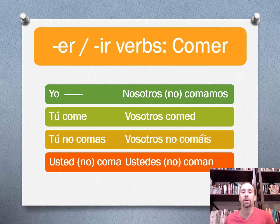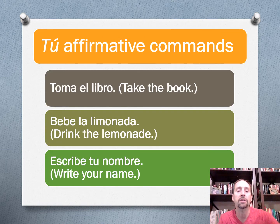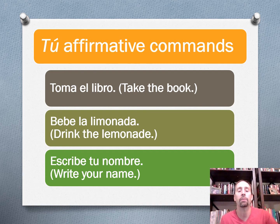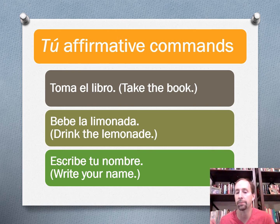And we're going to break these down part by part in this video. Let's take a look at some tú affirmative commands. All I'm going to do is drop the R for AR, ER, IR verbs. But notice that ER and IR verbs are also going to end in an E — so basically it's like the third person singular form. So: toma el libro — take the book, talking to one person you know well. Bebe la limonada — drink the lemonade. Escribe tu nombre — write your name. Pretty simple.